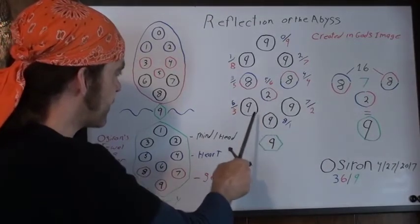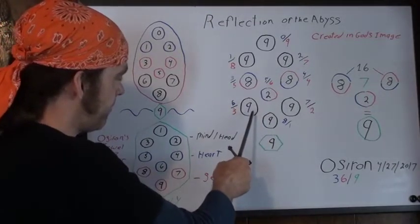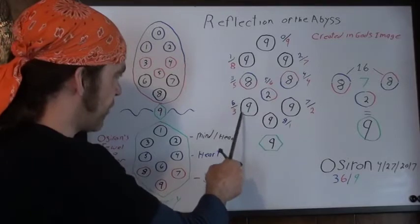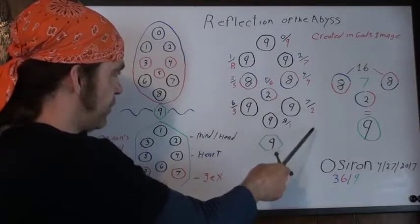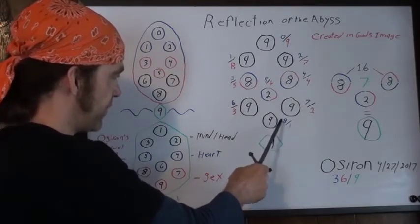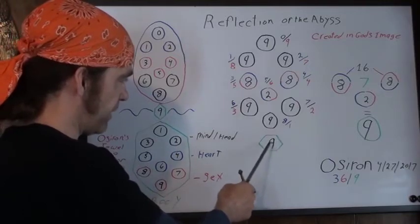Tiphareth is five and six. Hod is six and three. Netzach is seven and two. Yesod is eight and one. And of course, the kingdom.